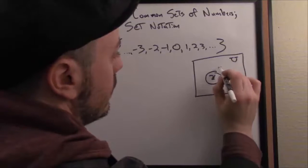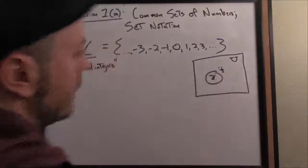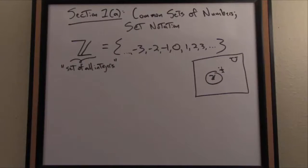One such example would be like the number one half. One half would be floating out here somewhere. I'm going to use a dot to indicate it. One half is out there, certainly outside of the set of all integers.